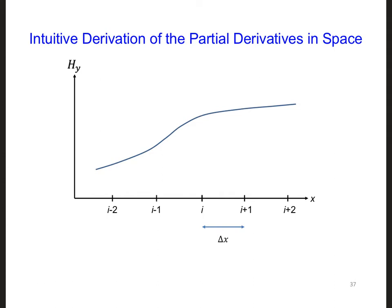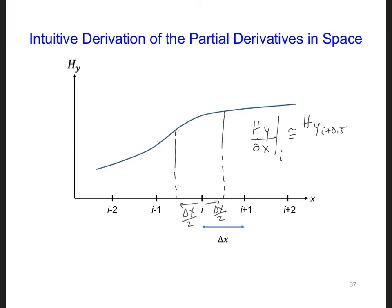As a last example, we could take two neighboring values, one on either side of i — each delta x over 2 away. Then dHy/dx at position i is approximately Hy(i plus 0.5) minus Hy(i minus 0.5), divided by delta x, because the two points are delta x over 2 in both directions so the total distance between them is delta x. This is called central differencing.